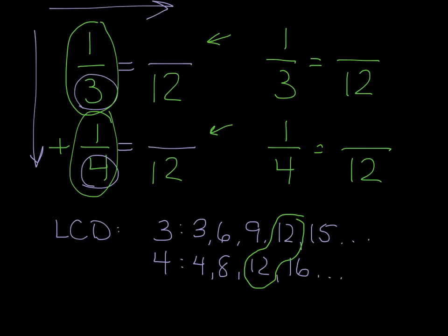So how do I get from 3 to 12? Well, I multiply by 4. And whatever I do to the bottom, I have to do to the top. So I multiply by 4 and my new numerator is 4.